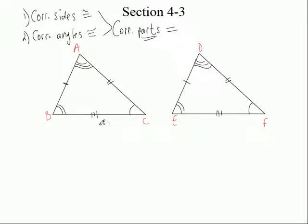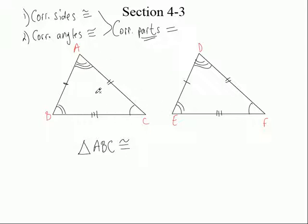Now let's name this triangle. It's triangle ABC. Is that the only thing I could have called it? I could have called it CBA, ACB, BCA, BAC — all kinds of different things. I chose ABC. Now if I chose ABC on this one, I want to go DEF on this one — I want the corresponding parts to match up. Which one corresponds to A over here? The D. Which one corresponds to B? The E. And which one corresponds to C? The F. It's very important that you write your triangles in that order.